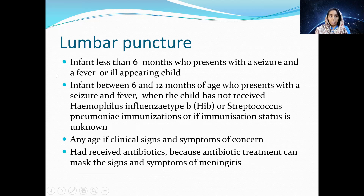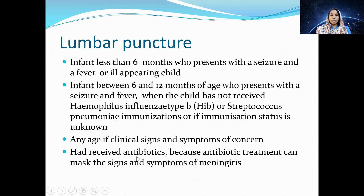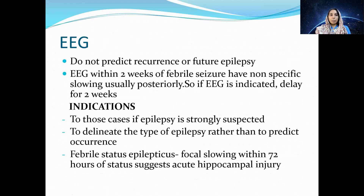In infants between 6–12 months, LP is indicated if they did not receive H. influenzae or S. pneumoniae immunization, or if immunization status is unknown. LP is also indicated at any age if there are clinical signs and symptoms suggesting meningitis or encephalitis, or in partially treated cases where antibiotic treatment may mask signs and symptoms of meningitis.